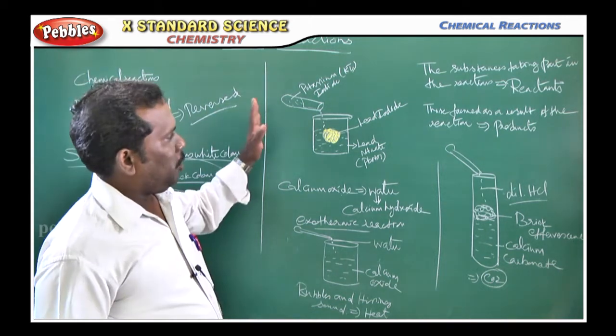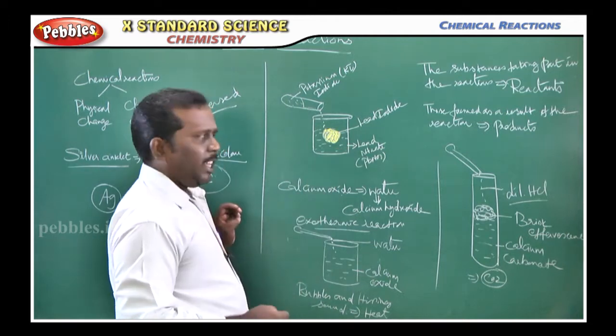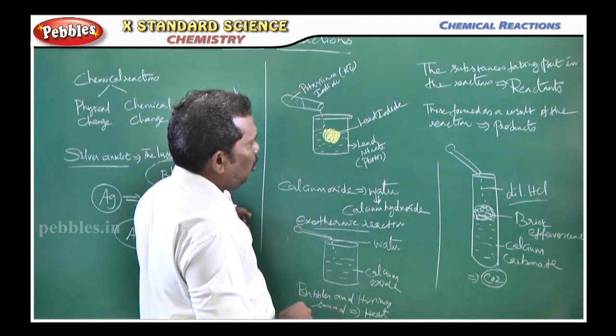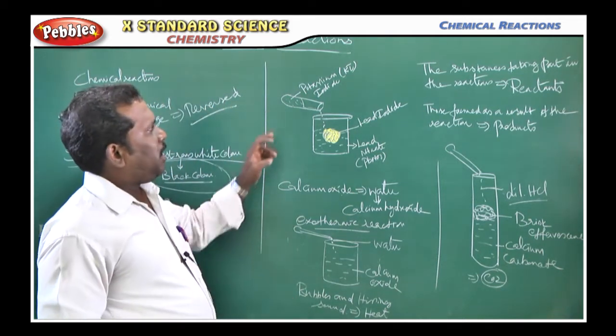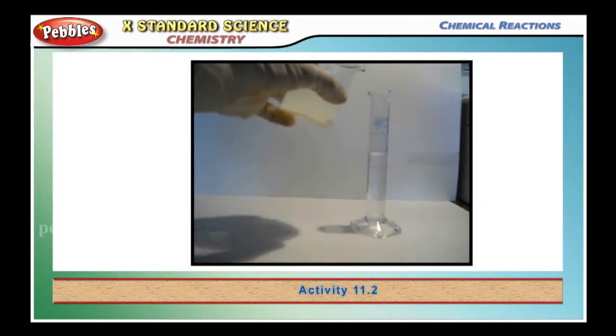Another example given in your textbook is, see there in a beaker, we take the lead nitrate PbNO3. Then we added a few drops of potassium iodide in the lead nitrate.